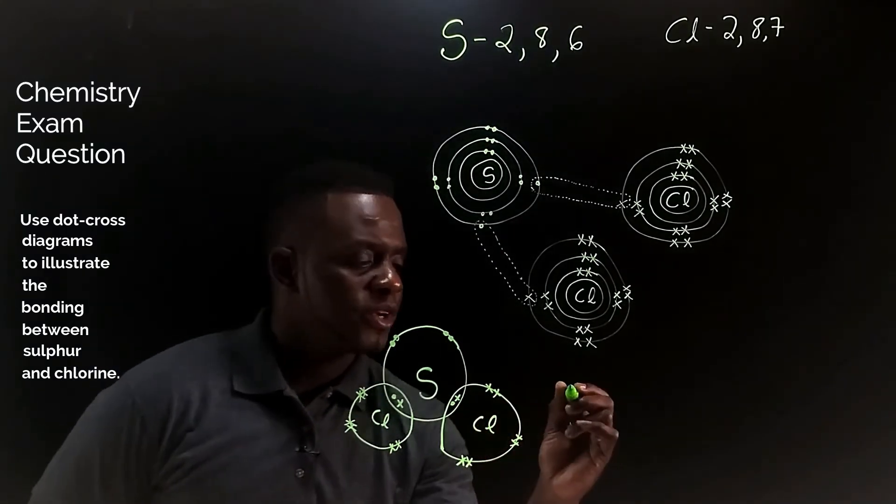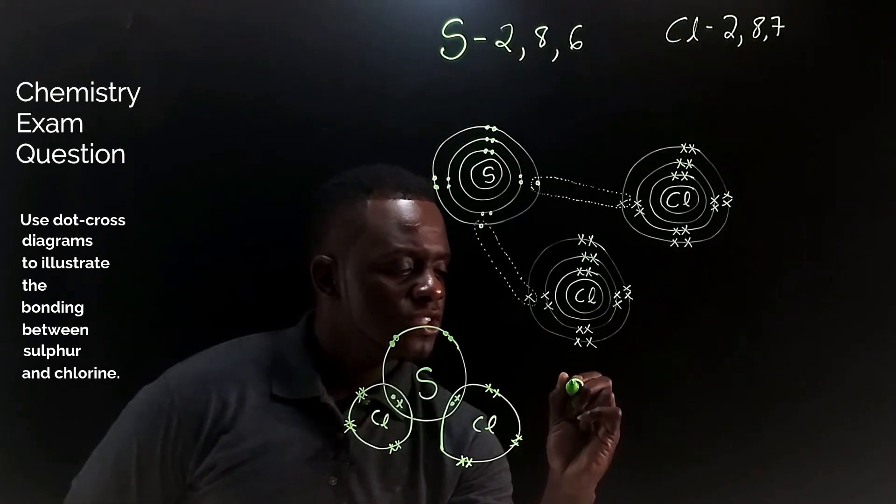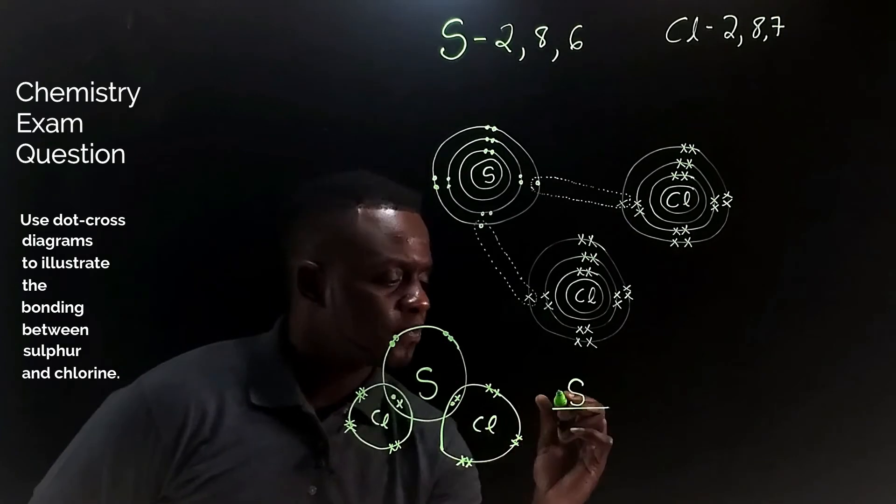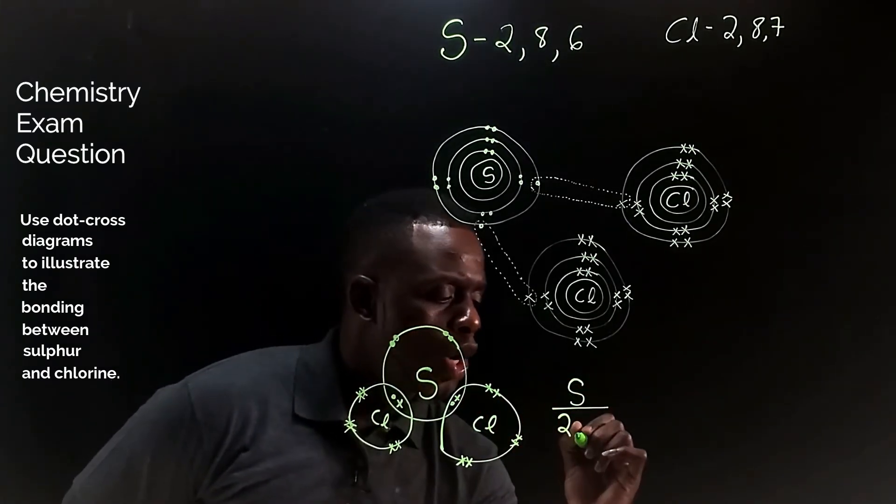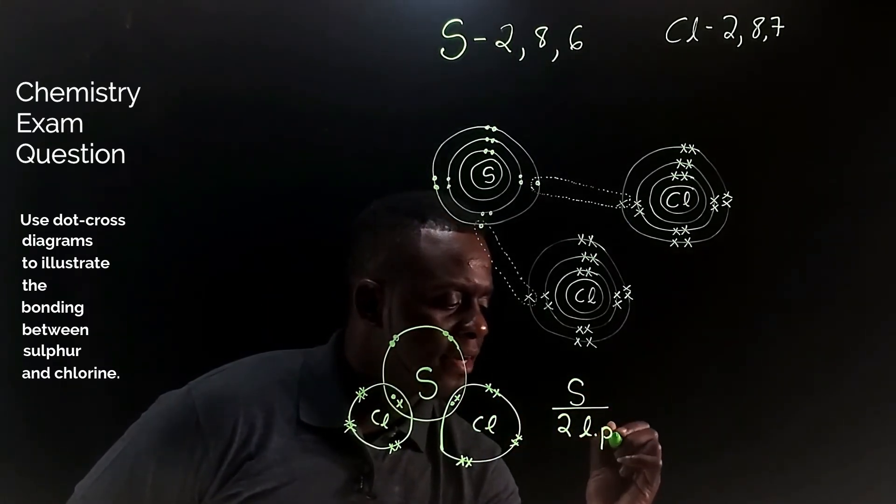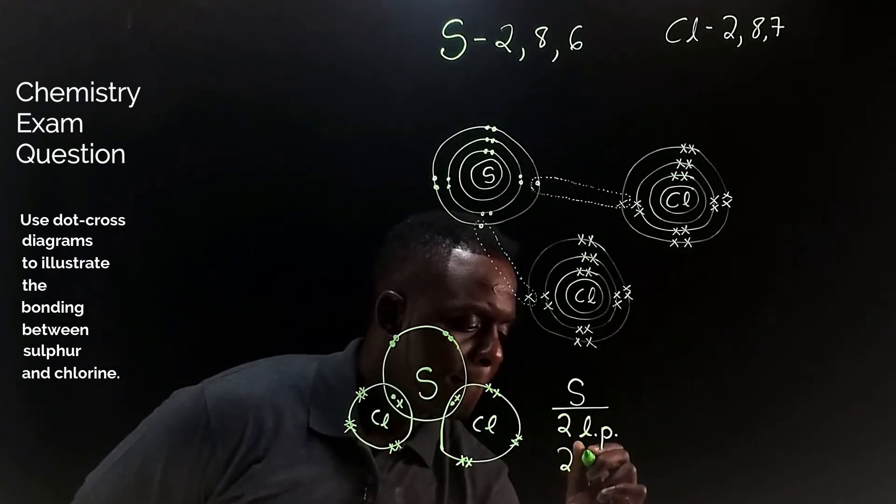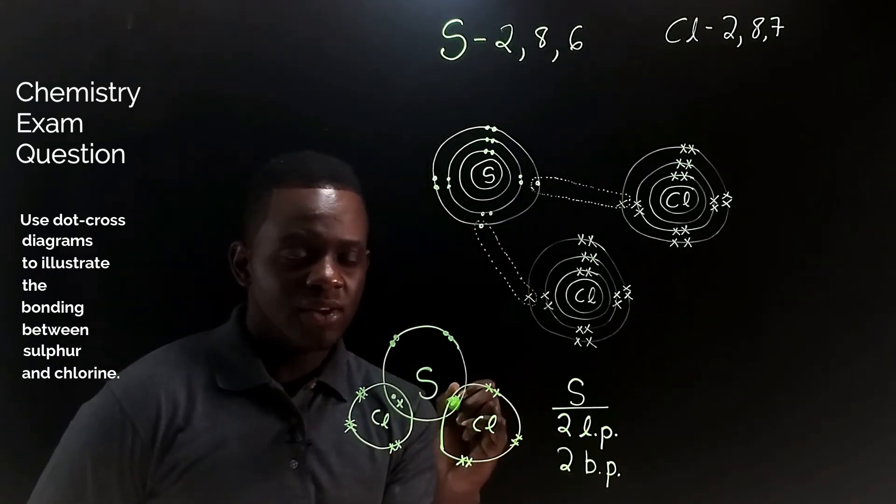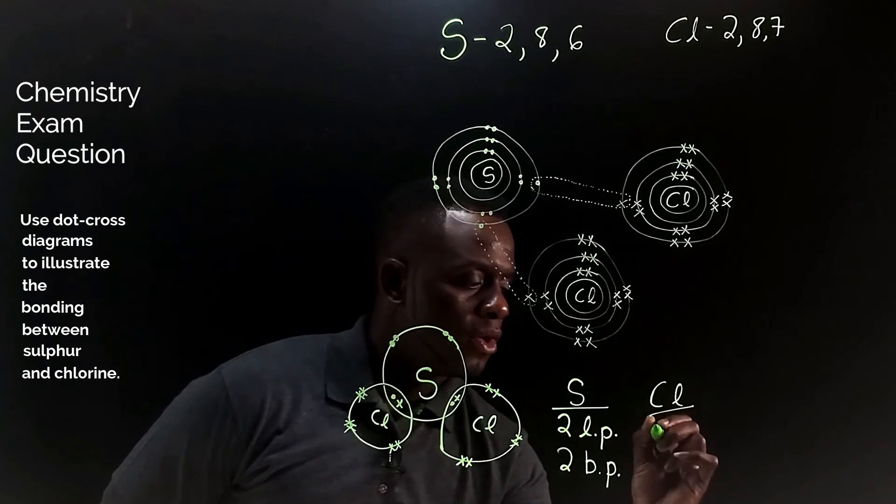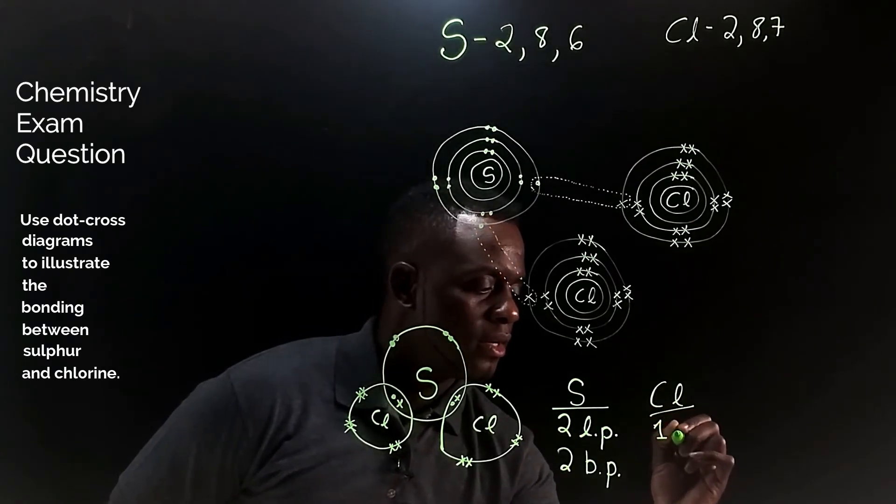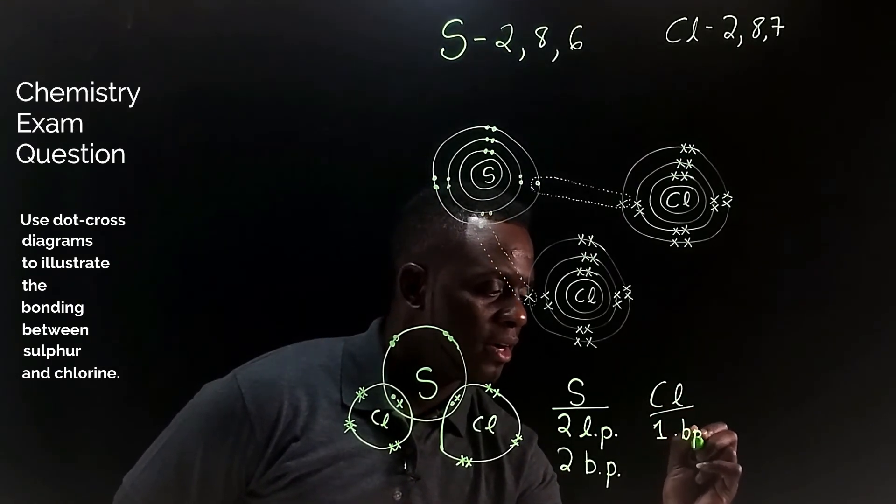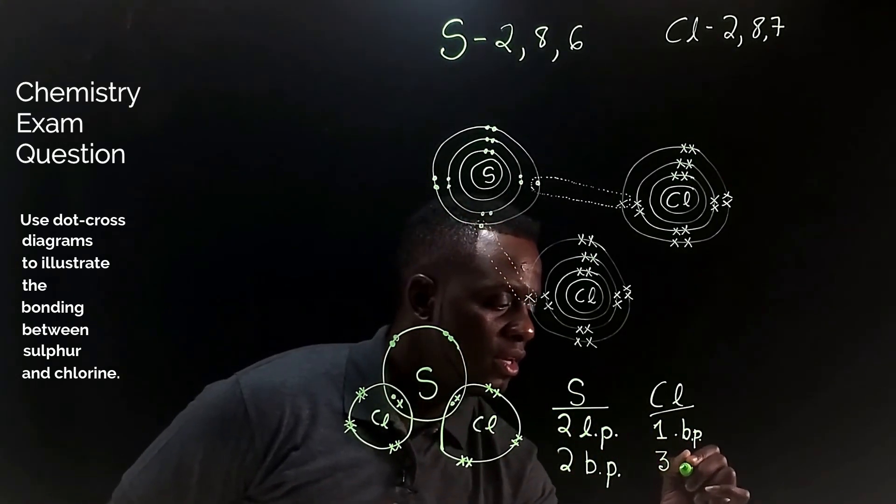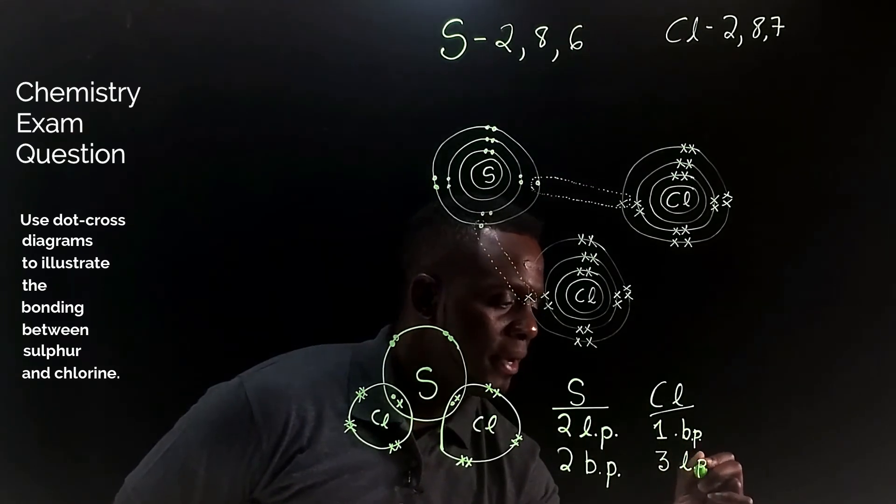Let's add some notes. Over here we have sulfur, each sulfur atom will have two lone pairs of electrons and two bond pairs of electrons. Each chlorine will have one bond pair and three lone pairs of electrons.